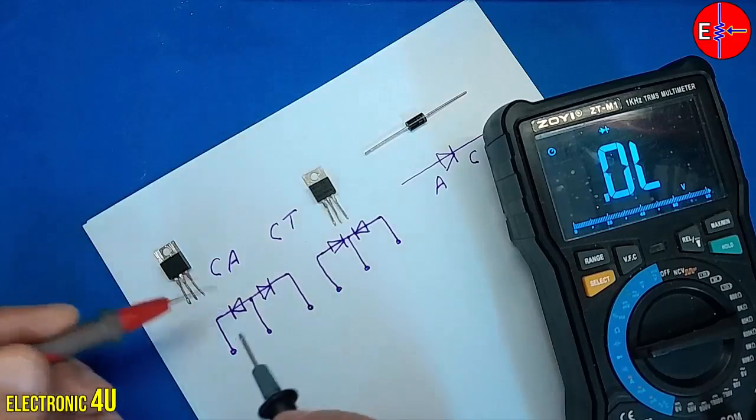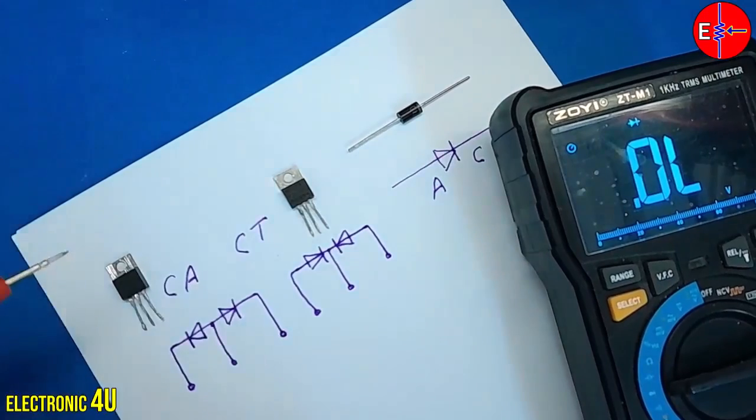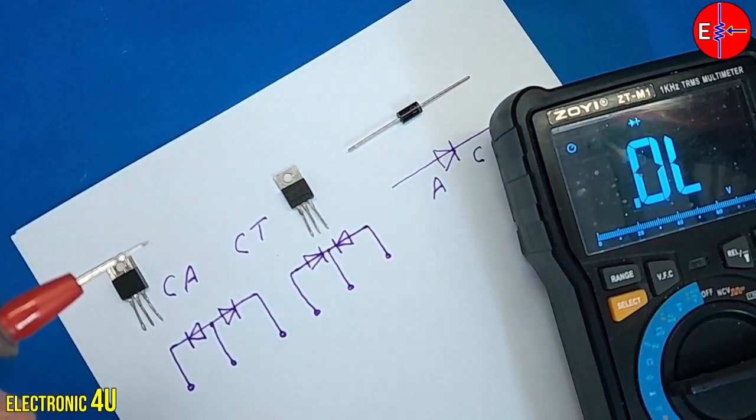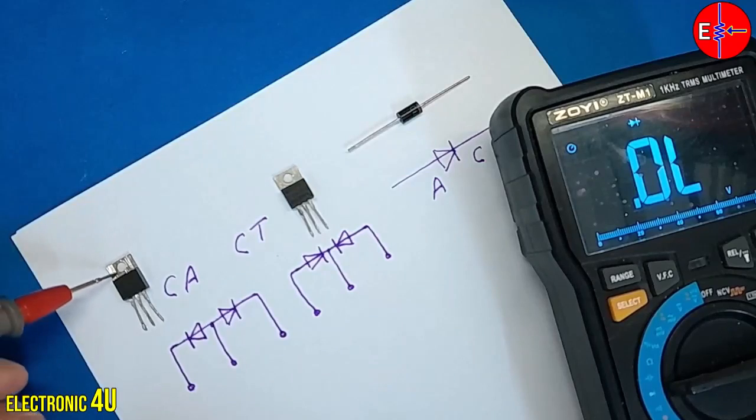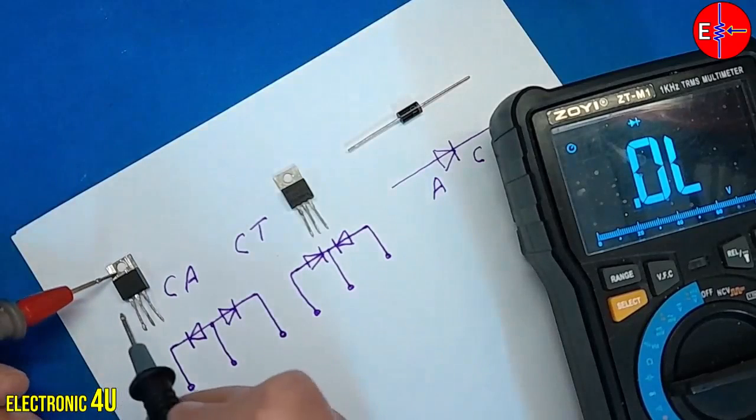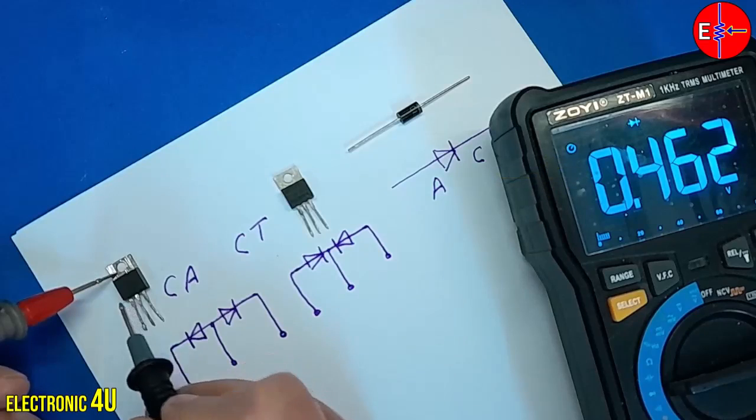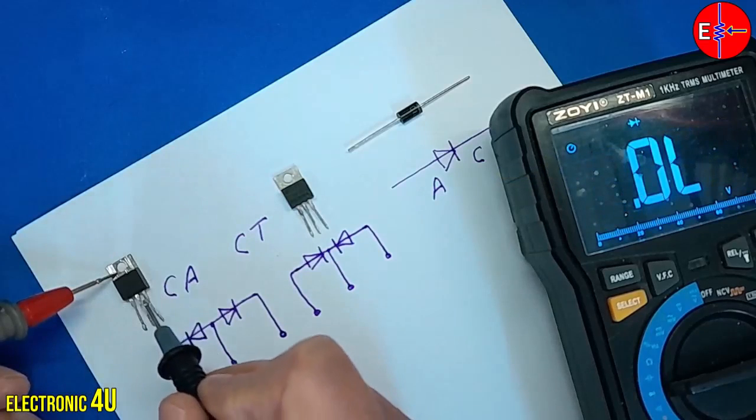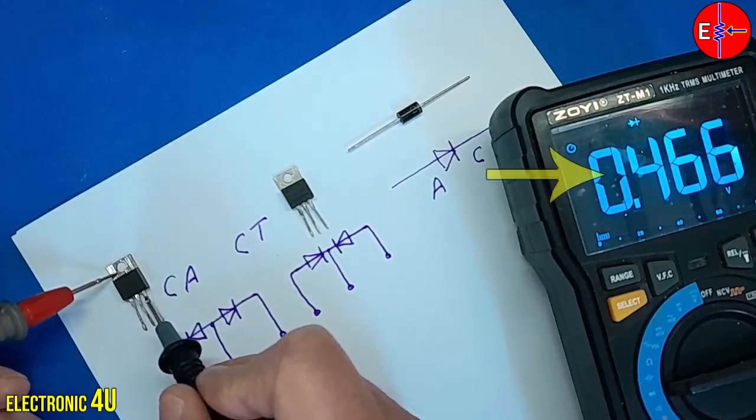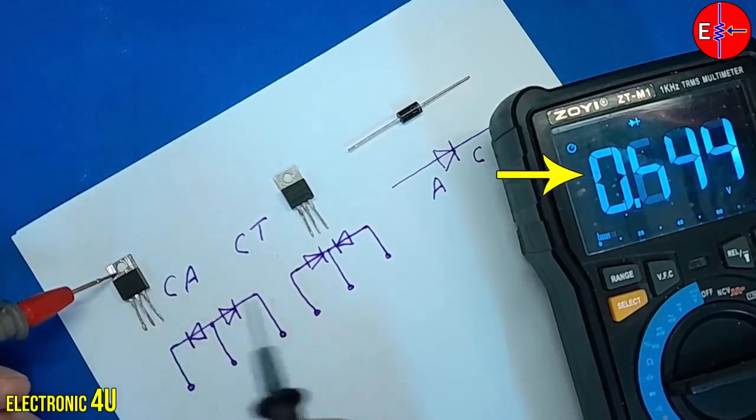Now I will actually test. I put the red probe on the middle pin. The middle pin is connected to the top metal part. Black probe on the first pin. Pay attention to the multimeter. A number is displayed. Now I choose the second pin. The second number is shown.